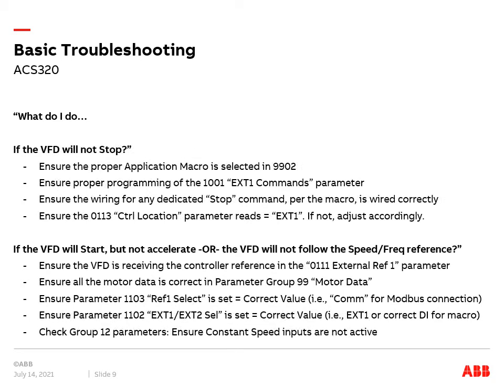What do I do if the VFD will not stop? Ensure the proper application macro is selected in parameter 9902. Ensure proper programming of the 1001 ext1 commands parameter. Ensure the wiring for any dedicated stop command per the macro is wired correctly. And lastly, ensure that the 0113 control location parameter reads equal to ext1.